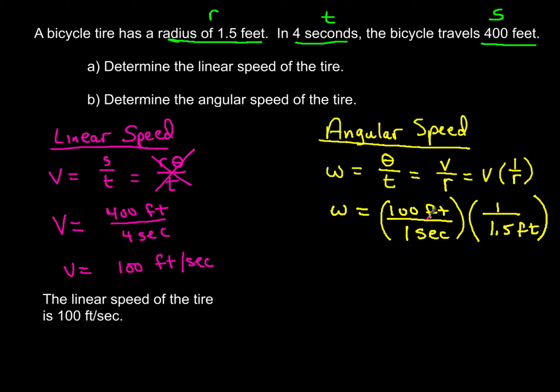So this, when we write it like this, notice our units of feet will cancel out. Now when that happens, we'll be left with the following. So we end up with 100 radians over 1.5 seconds.